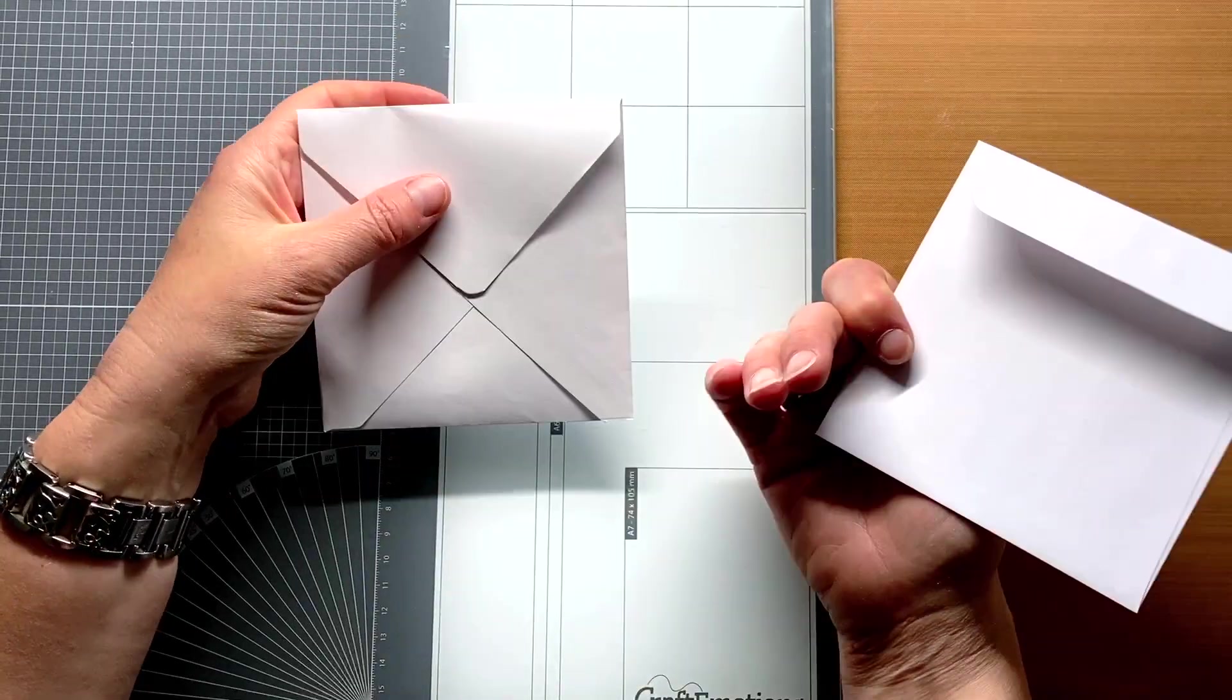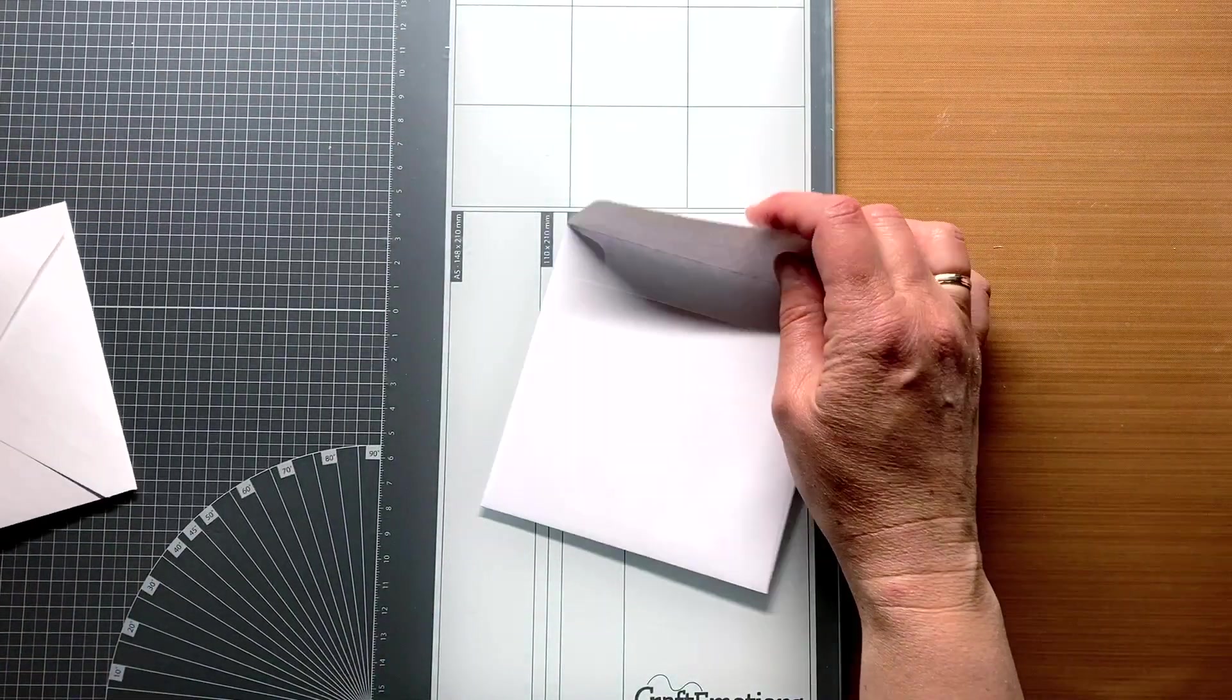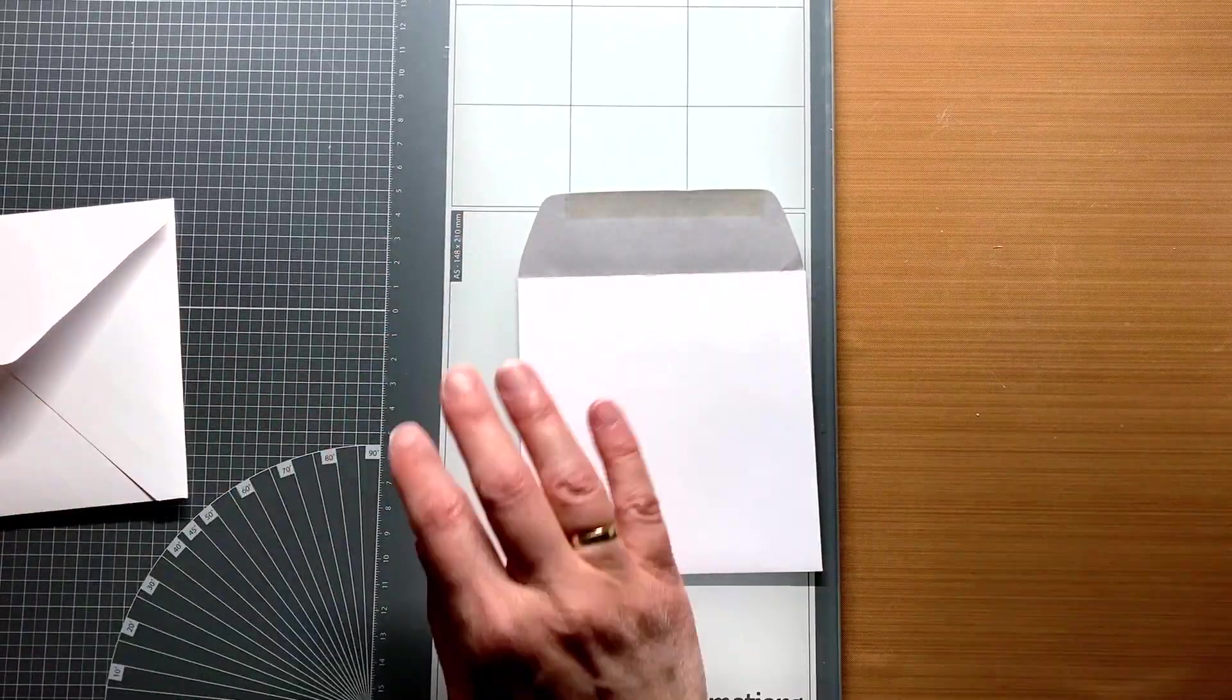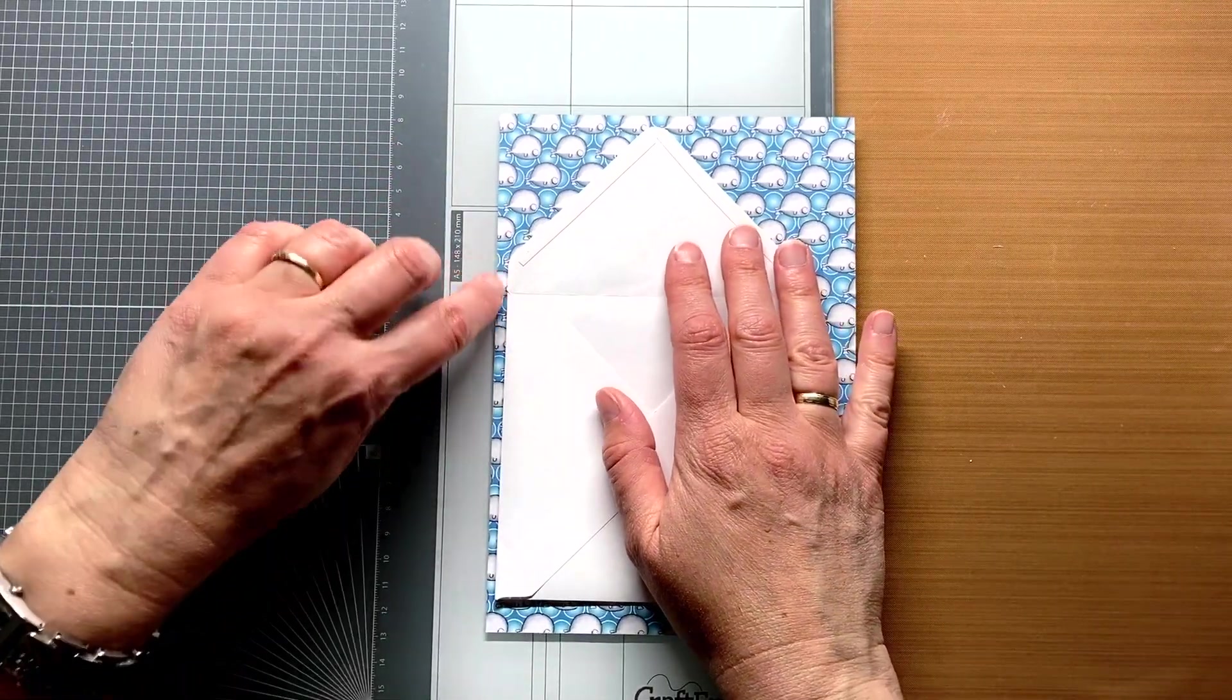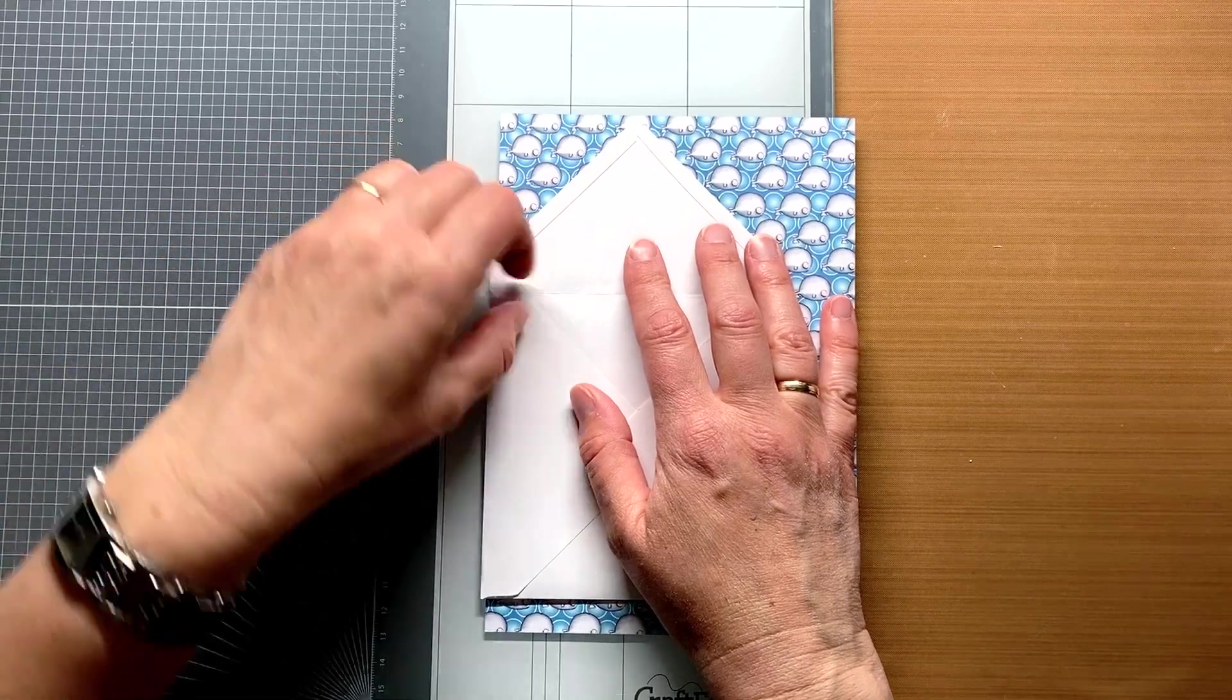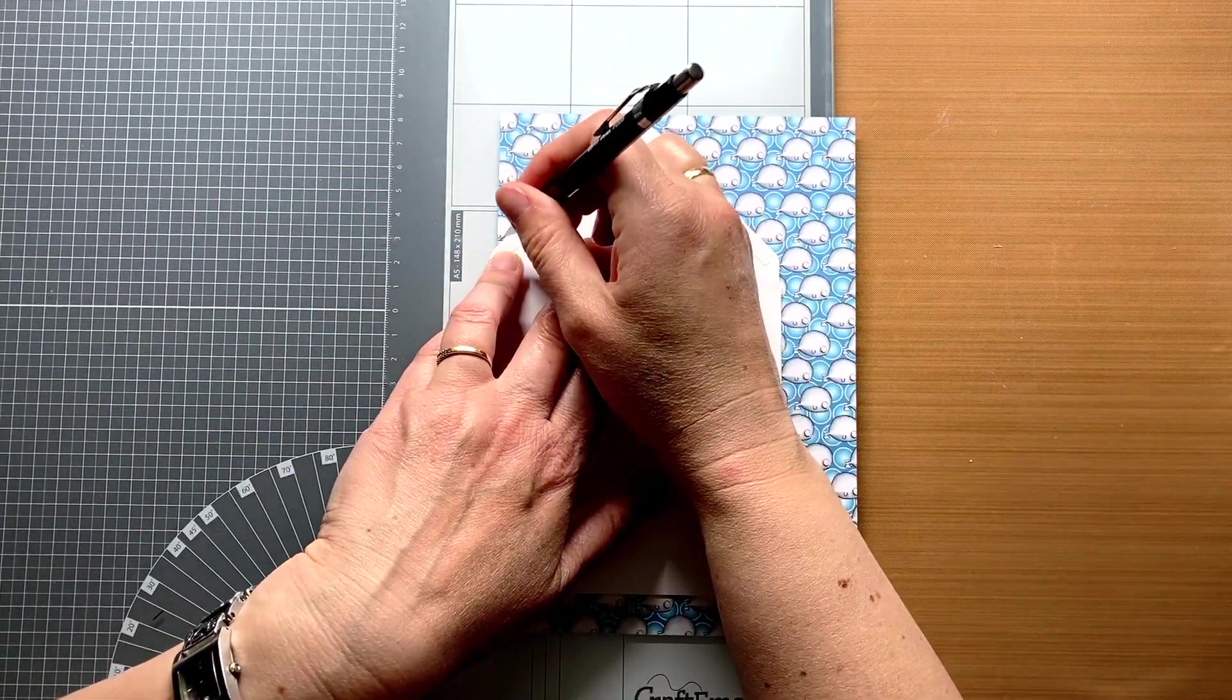I'm going to use the homemade envelope to decorate. I'm going to use a piece of double sided patterned paper for the inside of the envelope. The principle for both envelopes is the same, only the shape is different. What you do is, you put the patterned paper under the envelope. You allow the envelope to protrude slightly on the side. It will need to go in later, and if it's too tight, it won't fit.